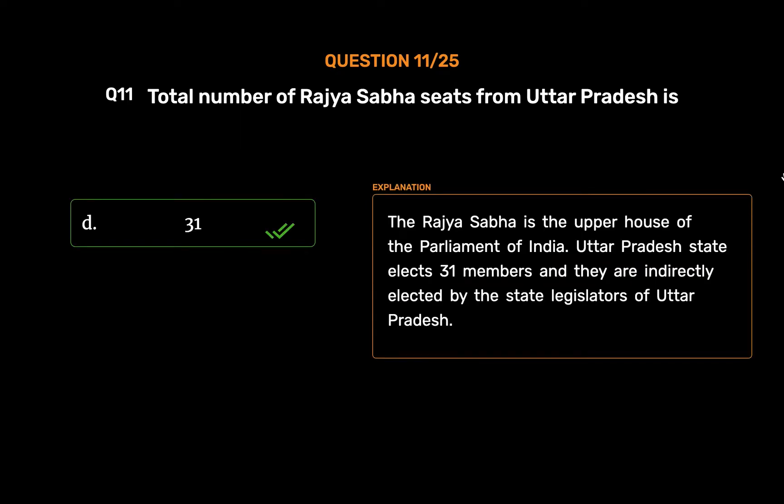The Rajya Sabha is the upper house of the parliament of India. Uttar Pradesh state elects 31 members and they are indirectly elected by the state legislators of Uttar Pradesh.